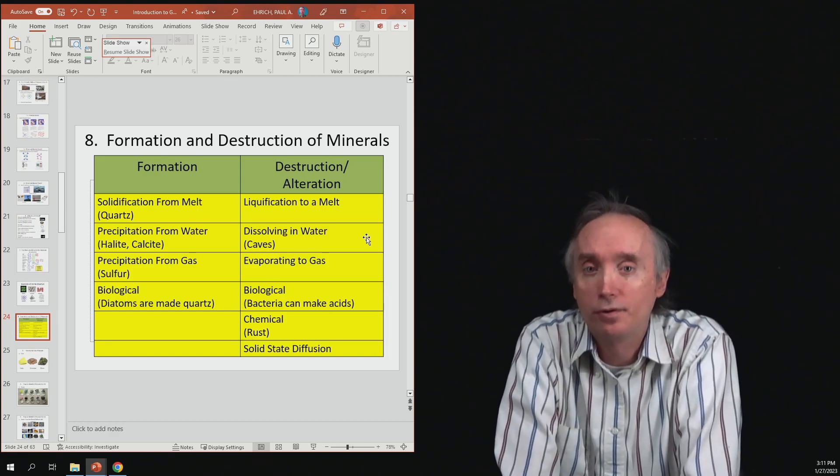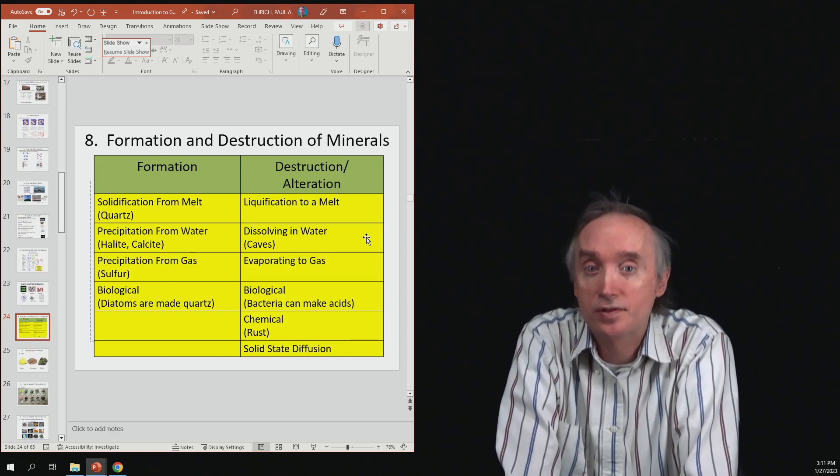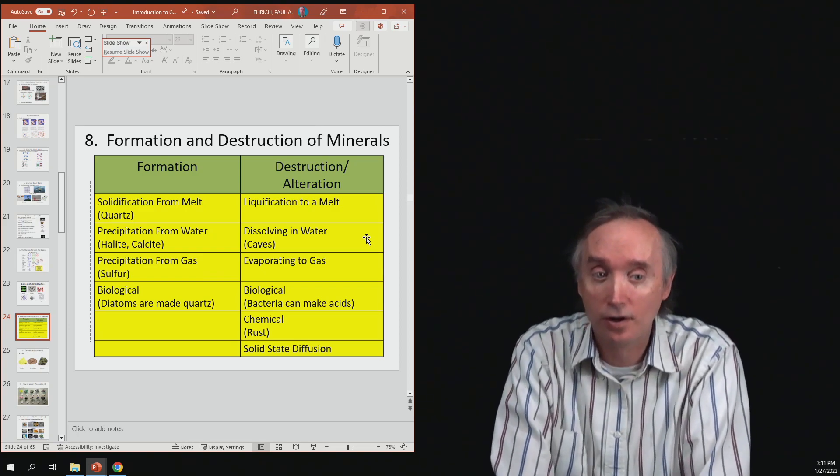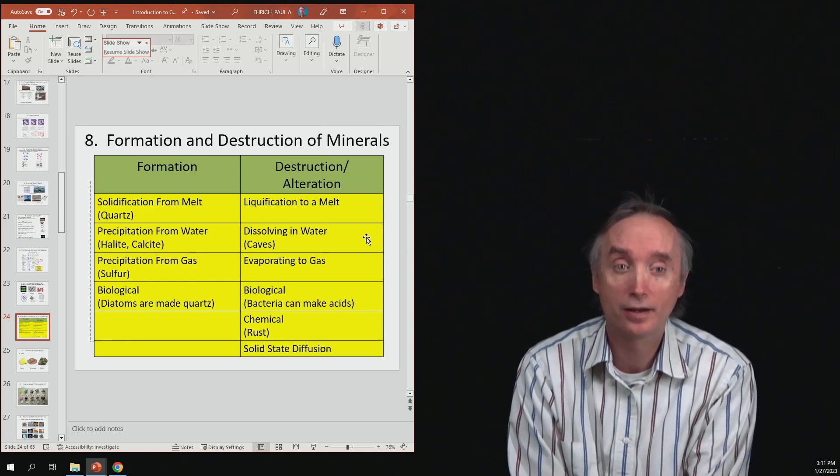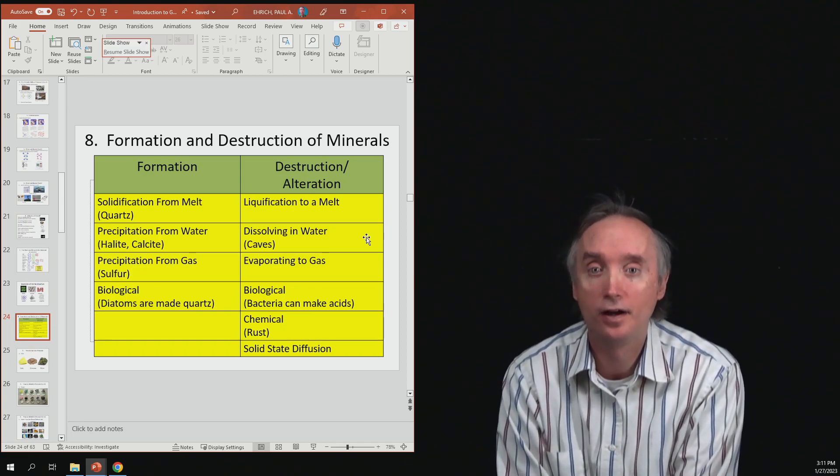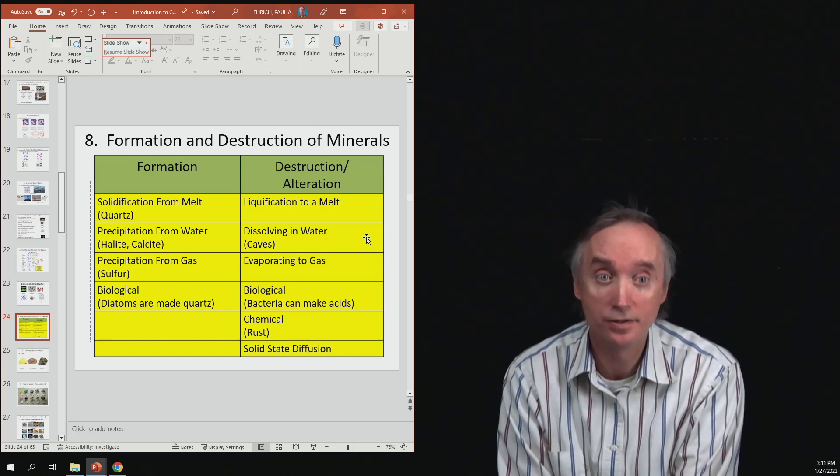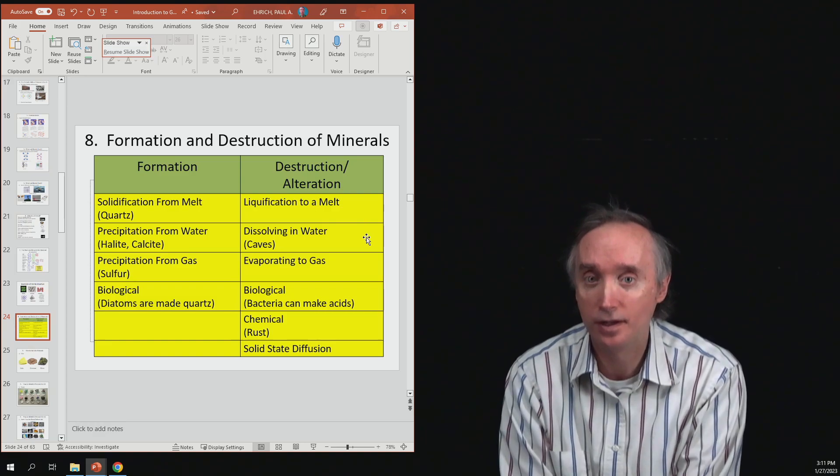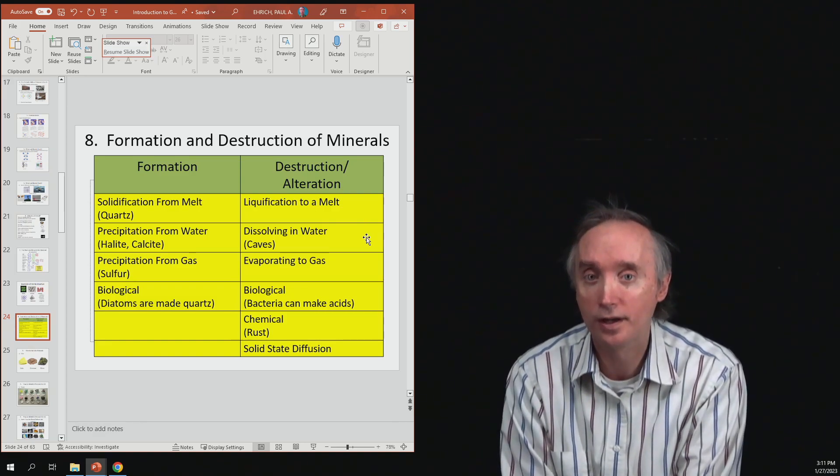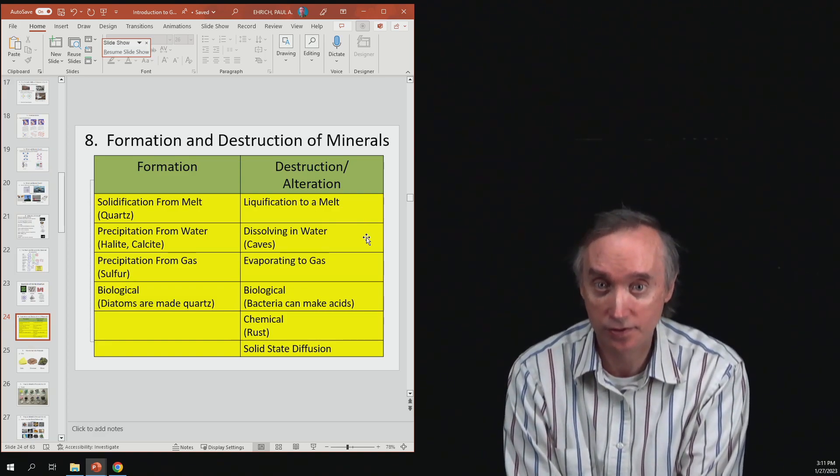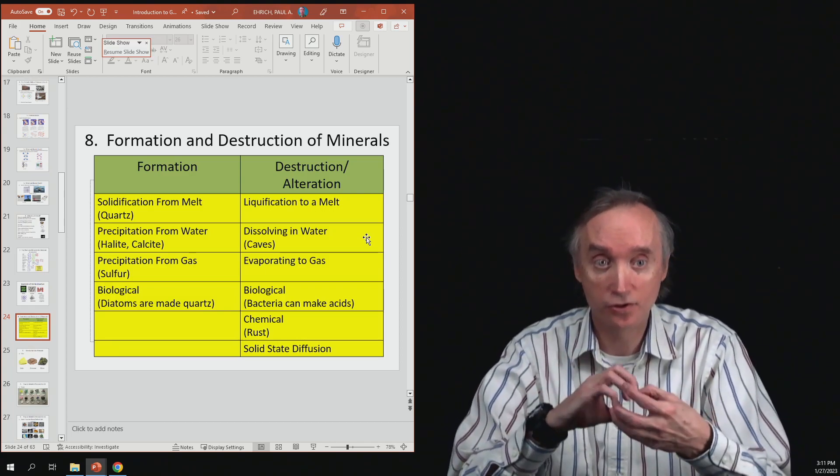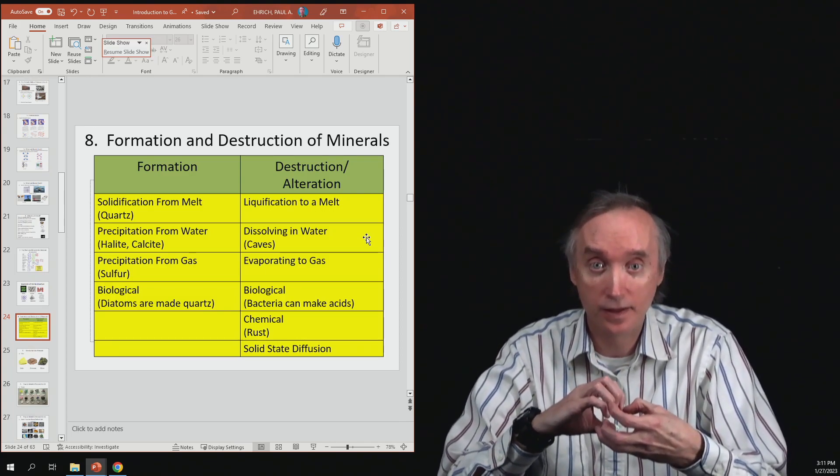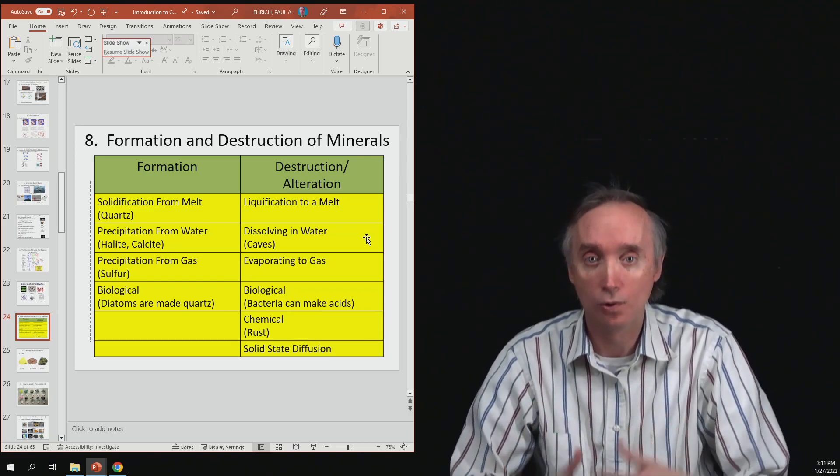So one way that a mineral can form is from the solidification of a melt. A melt is going to be like magma, so it's going to have inside of it ions, and it's going to have some silica and some gases. And so as it cools off, what can happen is those silicas can start to hook together, and they eventually can make crystals of quartz.